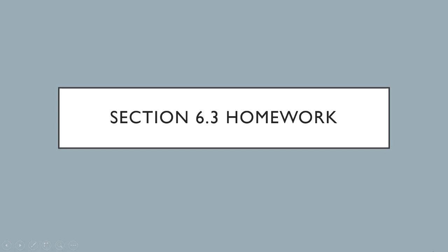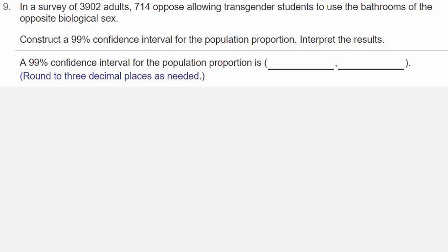We're looking at homework from section 6.3. This is question number 9. In a survey of 3,902 adults, 714 oppose allowing transgender students to use the bathrooms of the opposite biological sex. Construct a 99% confidence interval for the population proportion. Interpret the results.